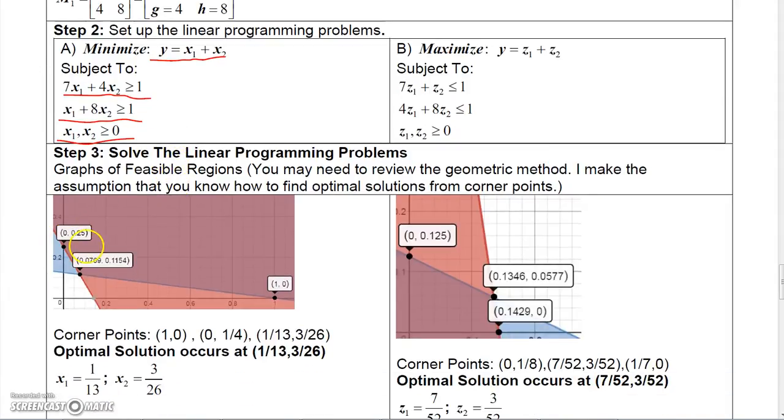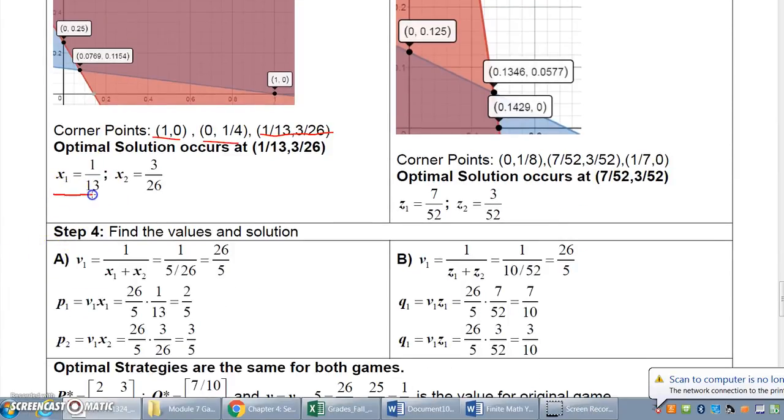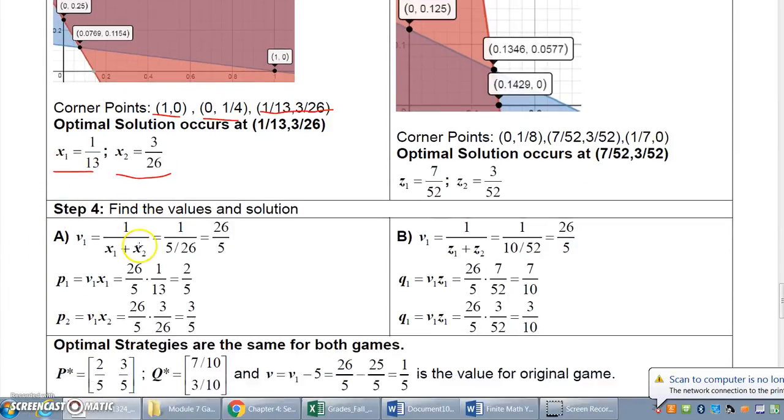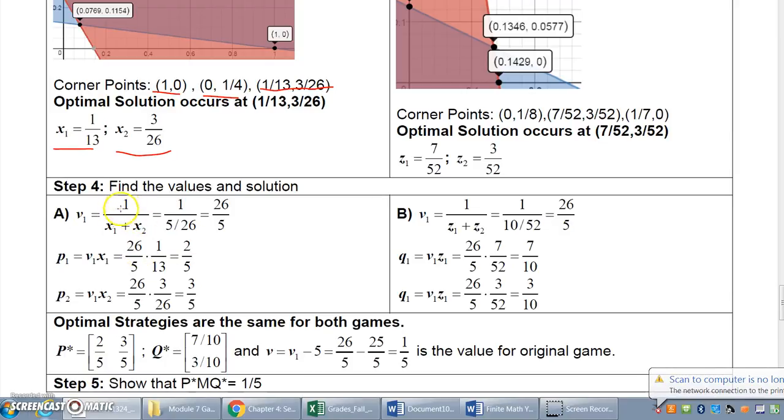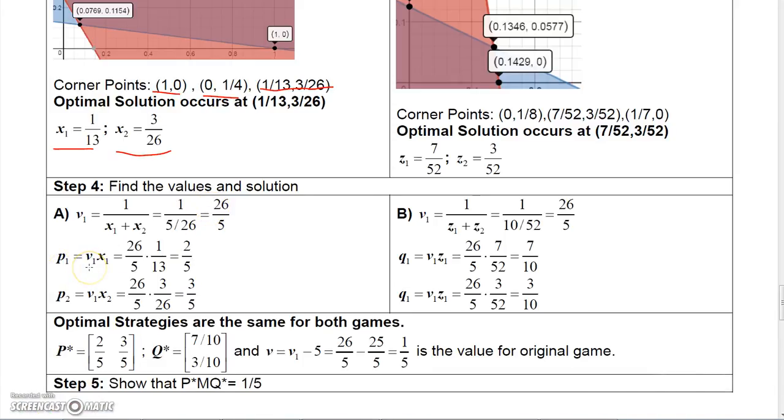If you solve this, you're going to get three corner points, which are 1 0, 0 1 4th, and then 1 13th and 3 26th. So X1 is 1 13th, X2 is 3 26th. 1 over X1 plus X2 would be 1 over 5 26th, which is 26 fifths. Then multiply 26 fifths times X1, which is 1 13th, you get 2 fifths. Multiply 26 fifths times X2, which is 3 26th, you get 3 fifths.